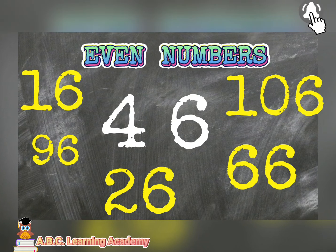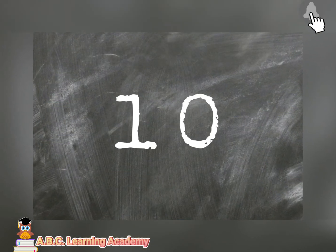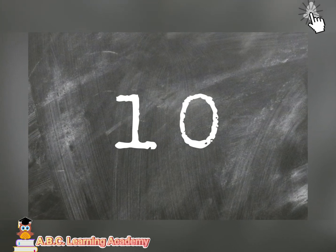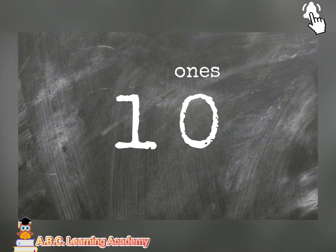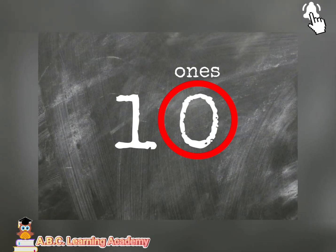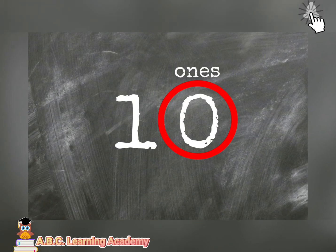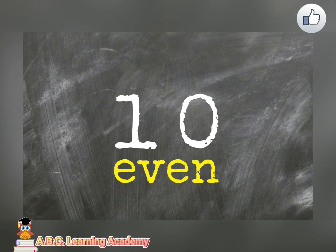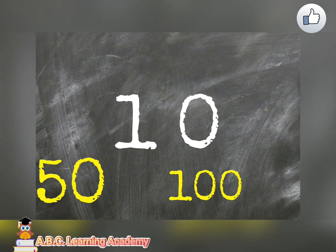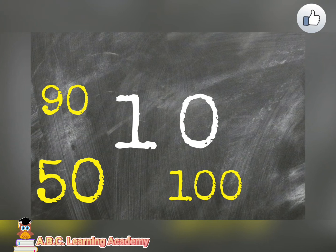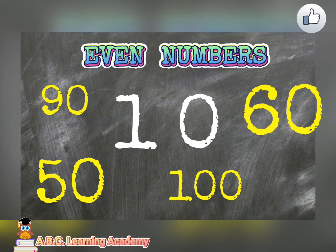Another example, we have here 10. Look at the ones. What is the number of your ones? It is zero. And zero is an even number. Therefore, all numbers that end with zero, like 50, 100, 90, and 60, they are all even numbers.